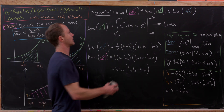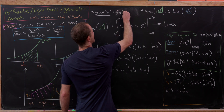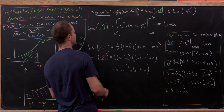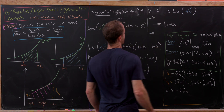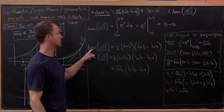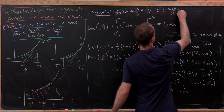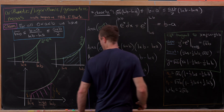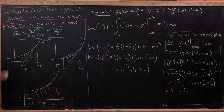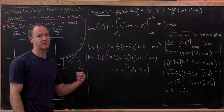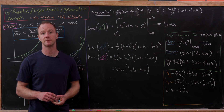Putting the three areas into the inequality: sqrt(ab) times (ln b minus ln a) is less than or equal to b minus a, which is less than or equal to (a plus b)/2 times (ln b minus ln a). Dividing through by (ln b minus ln a) gives exactly the arithmetic-logarithmic-geometric mean inequality. That's where the logarithmic mean fits in between the geometric and arithmetic means. Thanks for watching — if you haven't subscribed to the channel yet, please consider doing so.